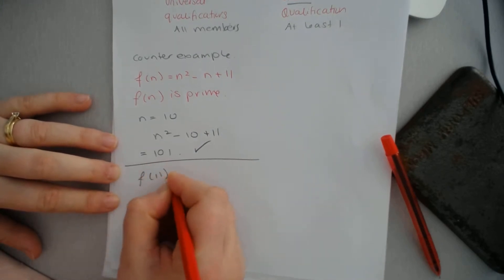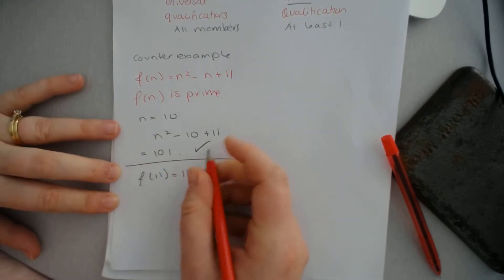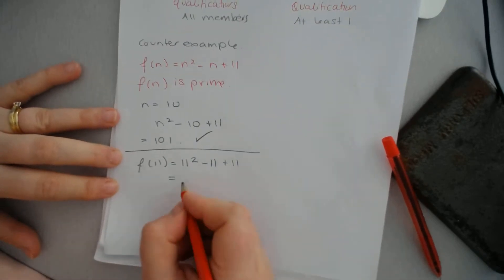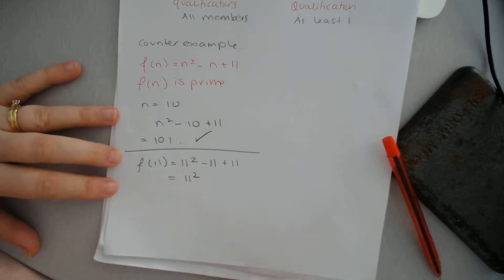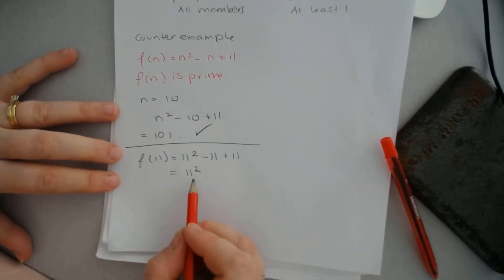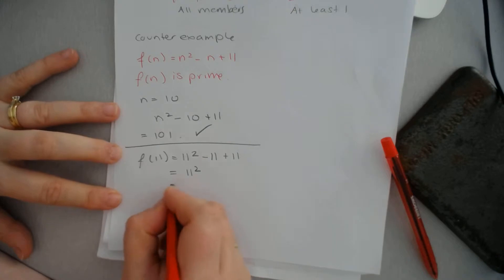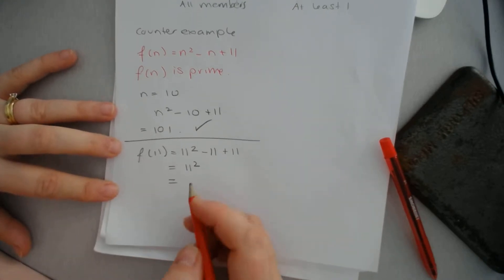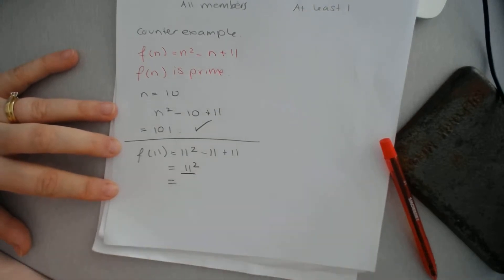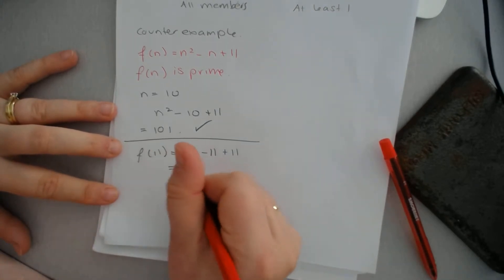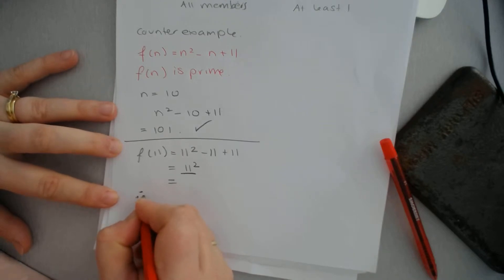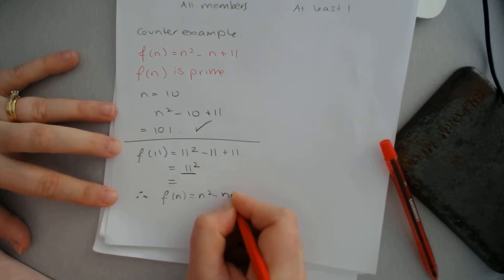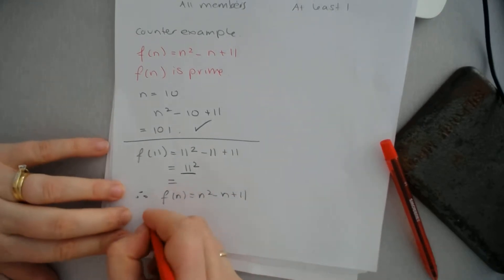If we have f of 11, what we get is 11 squared minus 11 plus 11, which is simply equal to 11 squared. Well, if we know about prime numbers, it only has two factors, one and itself. This can be multiplied. This is not a prime because it's actually a square number. Therefore, f(n) equals n squared minus n plus 11 is not always prime.